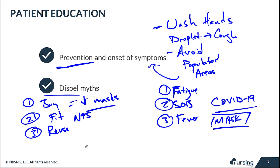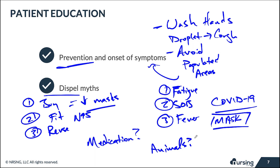Another common patient question: are there medications to cure or prevent coronavirus? Currently, the answer is no. There are experimental studies underway and future plans for vaccine development, but there are no approved medications or preventive treatments available right now — only supportive therapy. Patients also ask about pets: dogs, cats, and other animals are not carriers of COVID-19, so people will not get it from their pets.